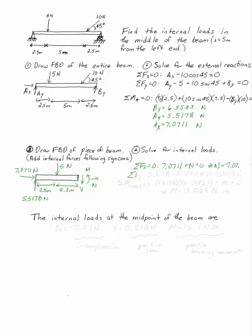The sum of the forces in Y tells me that 5.5178 minus 5 minus V is equal to 0, which gives me V equals 0.5178.